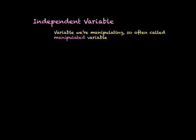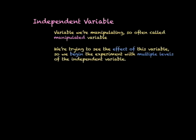An independent variable is the variable that we're manipulating, so it's often called the manipulated variable. We're trying to see the effect of this variable, so we begin the experiment with multiple levels of the independent variable. That might become more clear when we explore our example in detail.